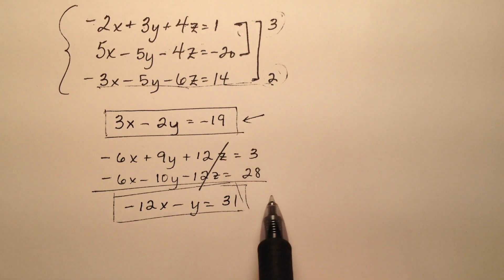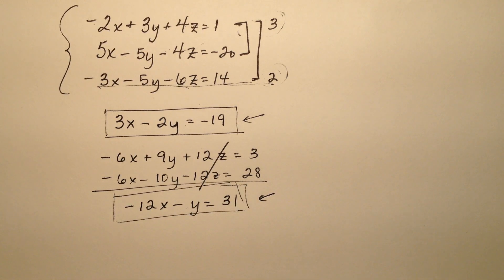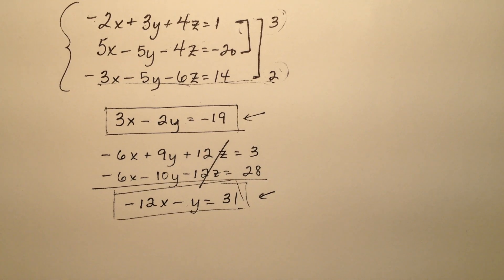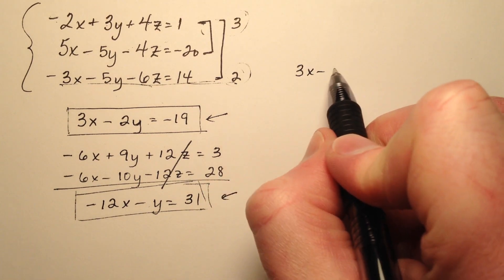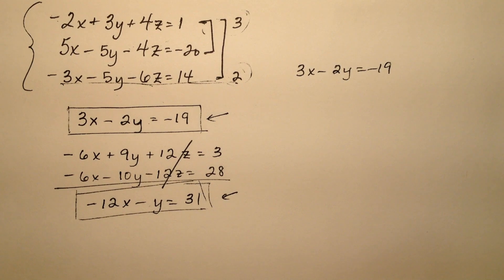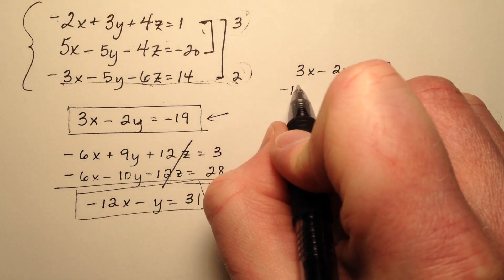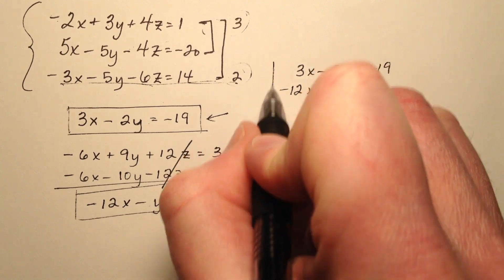So it looks like now I have a little system, two equations with two unknown values x and y. So let's go ahead and scoot over a little bit. We'll make some room and I'm going to rewrite this.